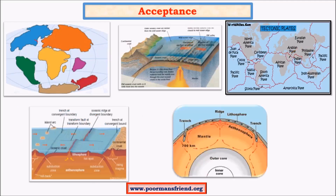Regarding acceptance: continental drift theory was completely discarded with the introduction of sea-floor spreading theory. Sea-floor spreading is only a partial theory since it deals only with oceanic plates. The fully and completely accepted theory is plate tectonics. In summary, continental drift theory is a failed theory, sea-floor spreading is partially accepted, and plate tectonics is the completely accepted theory.